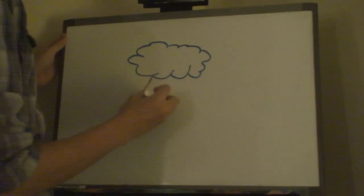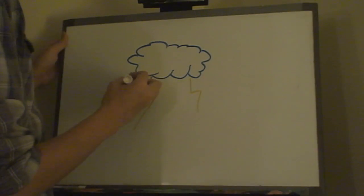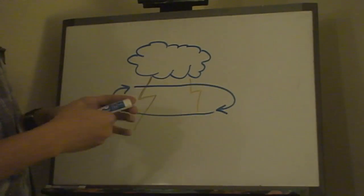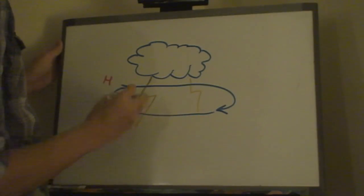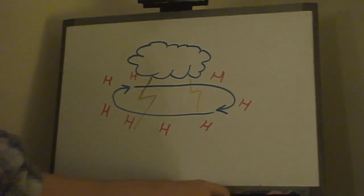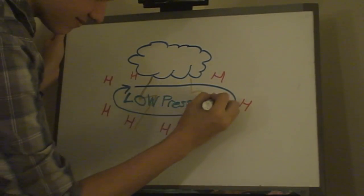Tornadoes are formed by a supercell, which is a type of thunderstorm. If the supercell has a rotation called a mesocycle, the low pressure system is surrounded by air with a higher temperature that circles around it.